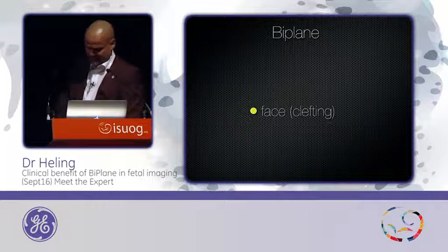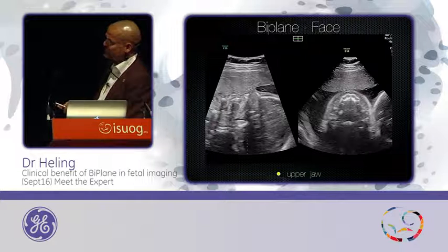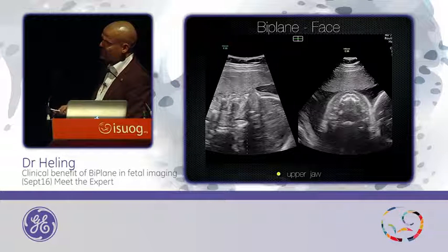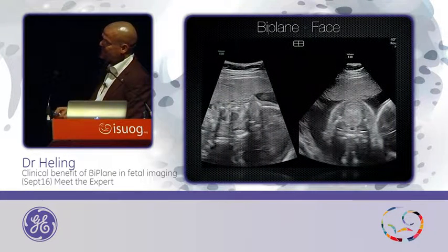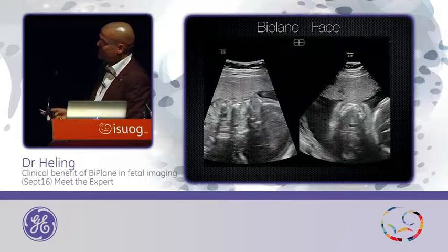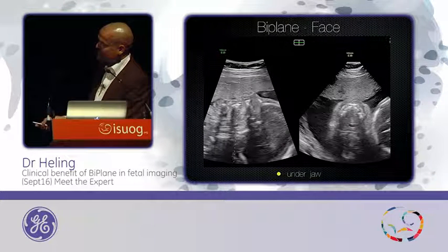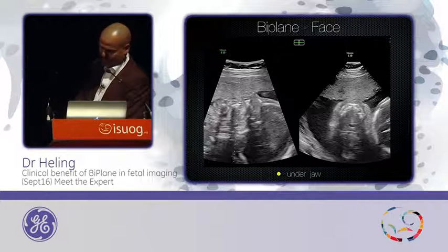Next is the face. We start with the fetus showing us the profile — the mid-sagittal profile. Normally you have problems getting good 3D images because the fetus is very close to the placenta. I put the line through the upper jaw and directly you see the arch of the upper jaw, the soft palate, and you can describe the normal anatomy. Then I go down — I put the line through the tongue and you see the tongue, the pharynx, and possibly the vocal cords. You can sweep these camera lines through and describe every anatomy.